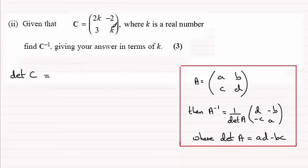It'll be 2K times K which is 2K², minus three times minus two which is minus six. So you've got minus minus six, so that's plus six. That's our determinant.